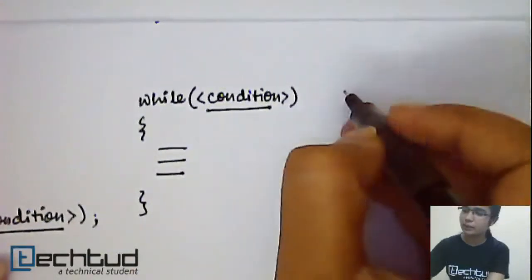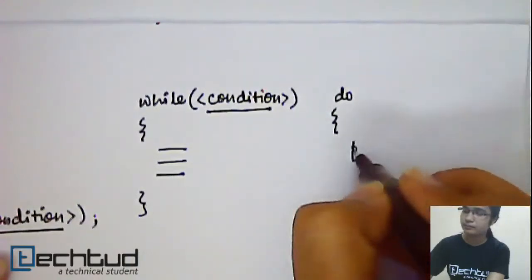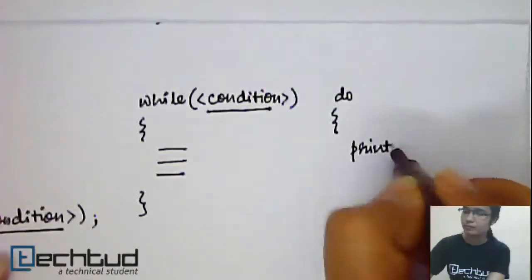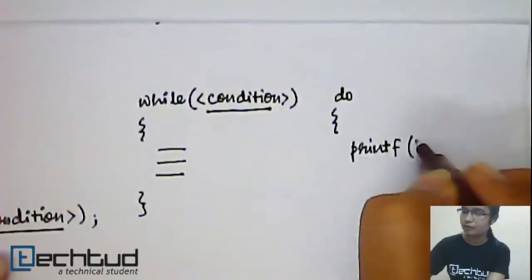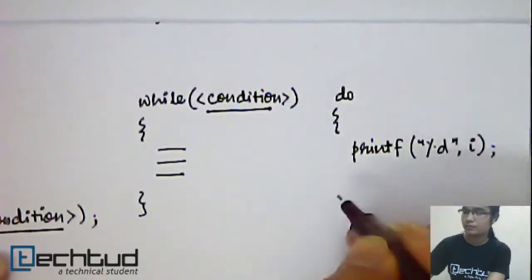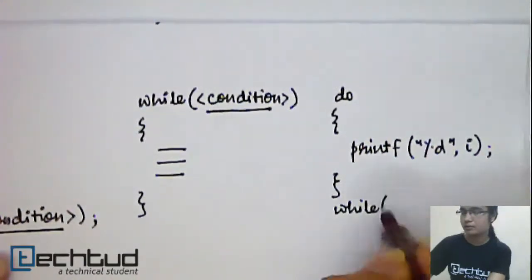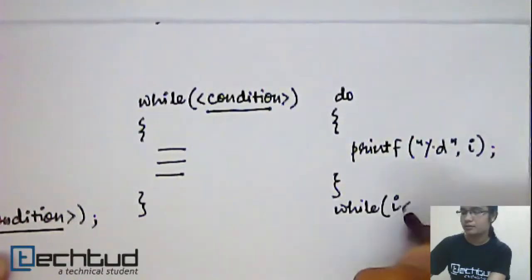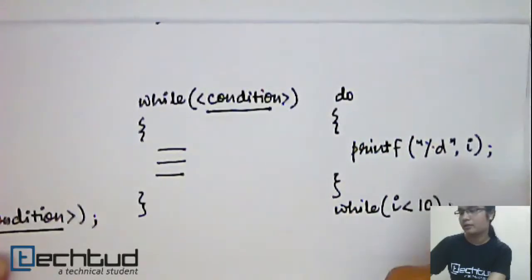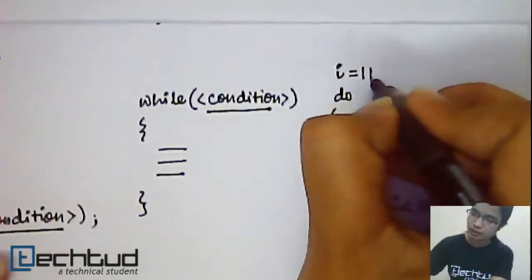If I take an example like this: do print i, and the condition is i is less than 10, and I have initialized the value of i as 11.